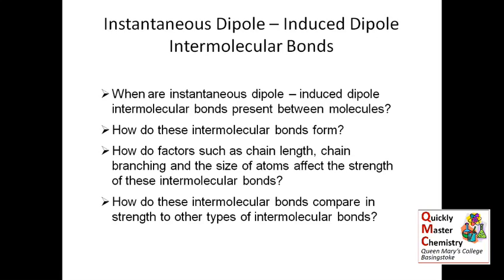The first point has a very simple answer, and that is that you can get this type of intermolecular bonding between any pair of molecules. There's nothing special needed in the molecule for this type of intermolecular bonding to occur. So if you have a pair of molecules, you can get instantaneous dipole-induced dipole intermolecular bonds present between them.